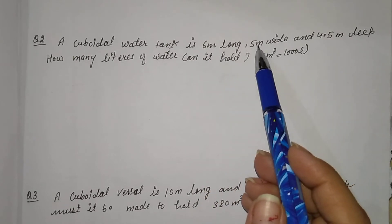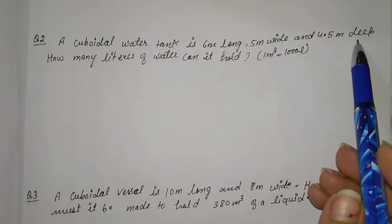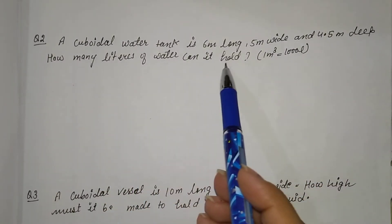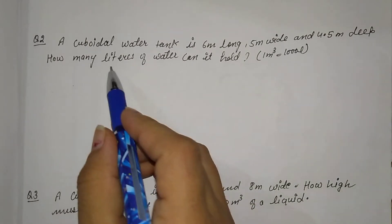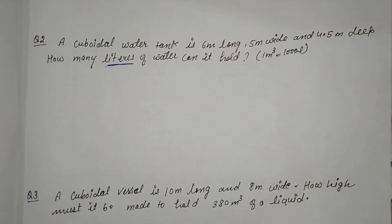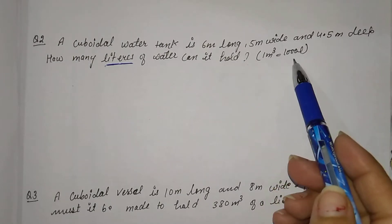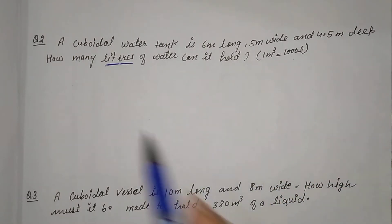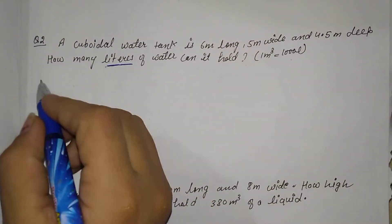Breadth is 5 meters and 4.5 meters deep means height. How many liters of water can it hold? Liters have been asked. You need to know how many liters are in 1 meter cube — 1 meter cube equals 1000 liters. So let's go ahead with the solution.